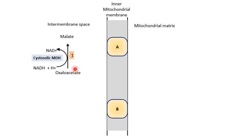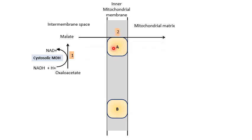That is the first step of the malate-aspartate shuttle. Now this malate will be transported to the mitochondrial matrix with the help of the malate transporter, along with the reducing equivalents.